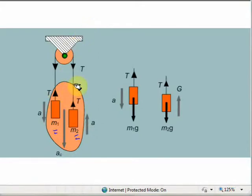If we take the mass m1, a tension force T will be acting upwards and its weight m1g will be acting downwards. Similarly, on mass m2, the tension force T will be acting upwards and its weight m2g will be acting downwards.